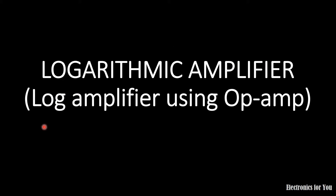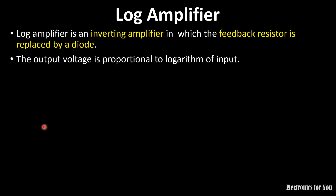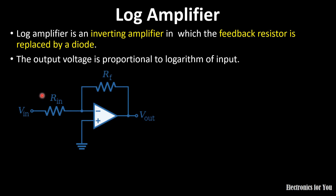Hello friends, welcome to our YouTube channel Electronics for You. In this video we will see the logarithmic amplifier using op-amp, also called a log amplifier. A logarithmic amplifier is an inverting amplifier, but the change is that the feedback resistor is replaced by a diode. This is our circuit for the inverting amplifier, where this is our input resistor R_in and this is our feedback resistance R_f.